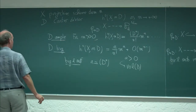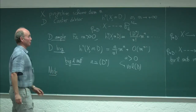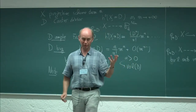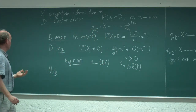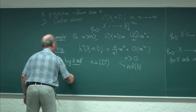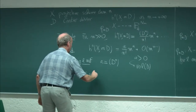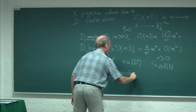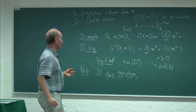A final note: whenever some multiple of D induces a morphism — meaning mD is base-point free — so if phi_{mD} is a morphism for some m, then D is base-point free and in particular nef. You can check that with what I did in the other lectures; it's not very difficult.